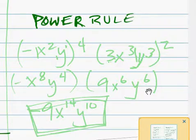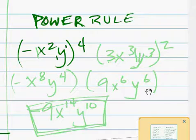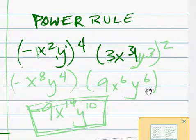Let's take a look at some negatives here. Let's go with negative x squared y to the 4th, and we'll multiply that by 3x to the 3rd, y to the 3rd, and then to the 2nd.